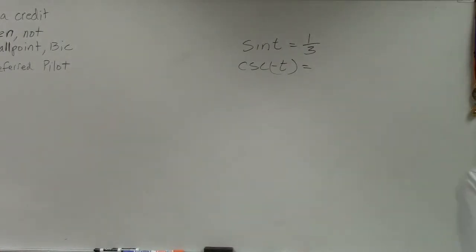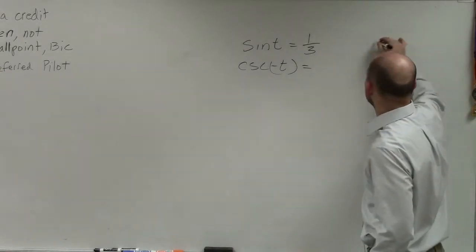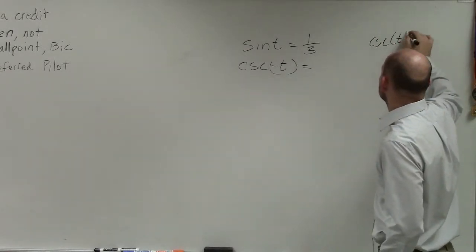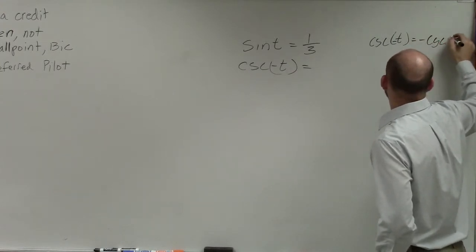So again, looking at this one, for the cosecant of negative t, again we need to understand, well, this is an odd function. So this cosecant of negative t is equal to the negative cosecant of t.